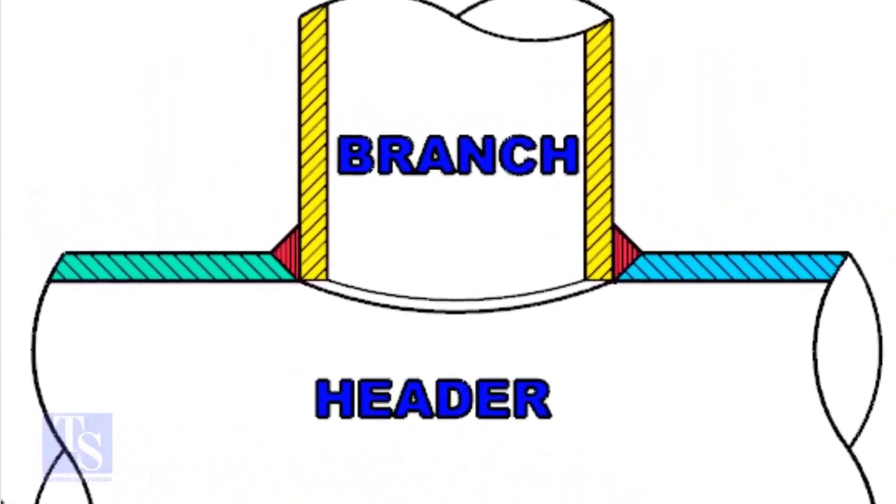Look at the stub-in joint. The bevel is prepared on the header, and the branch pipe is in the header.